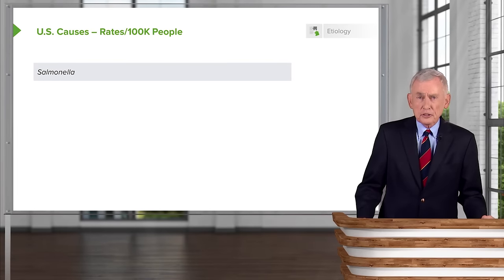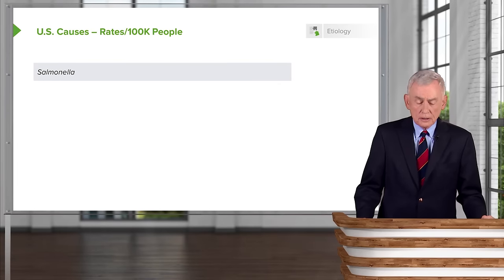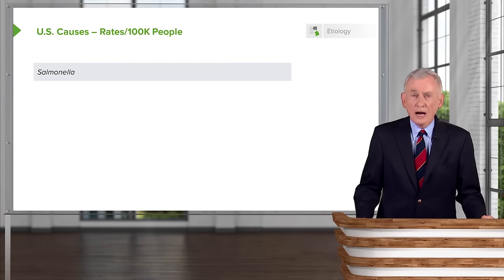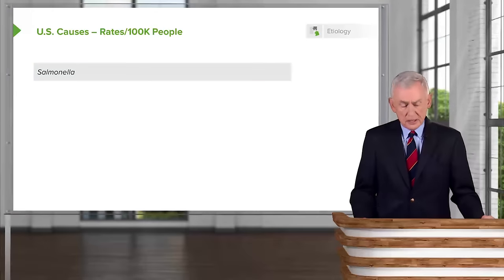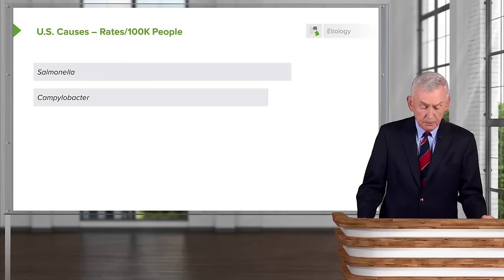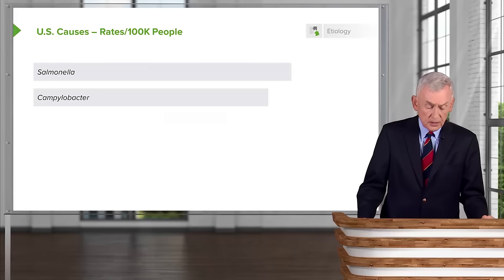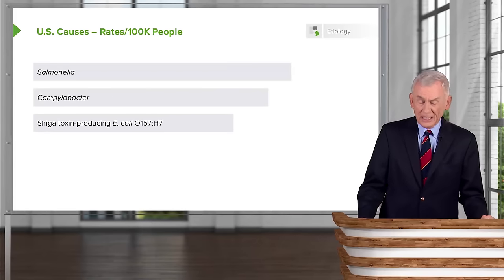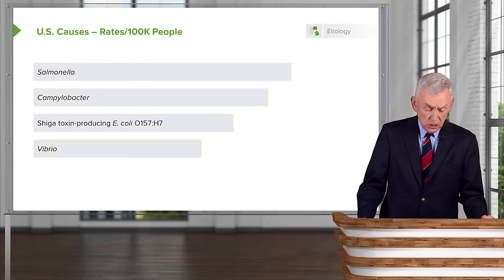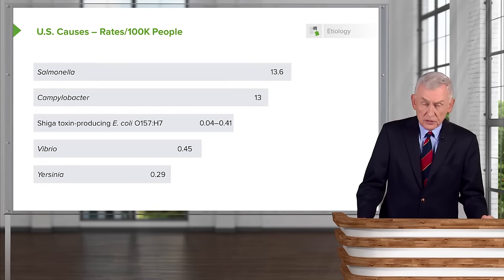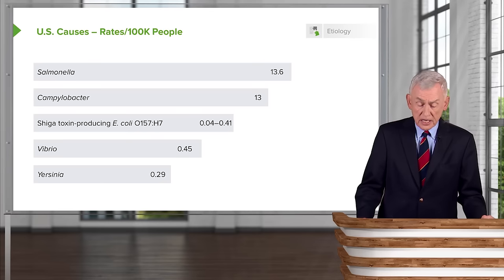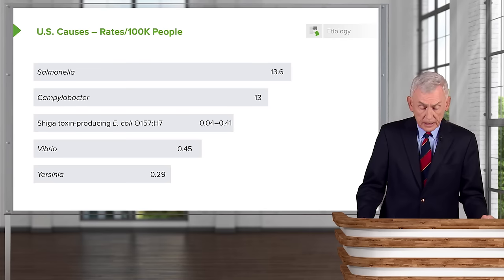If you're talking about organisms per 100,000 population, Salmonella leads the list, followed by Campylobacter, Shiga toxin-producing E. coli, Vibrio, and Yersinia. So Salmonella is quite a big problem in the United States — more about that later.